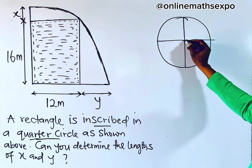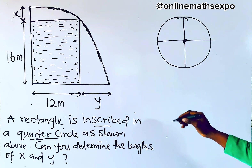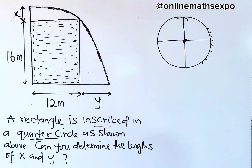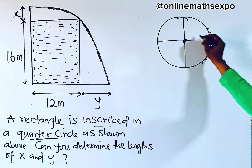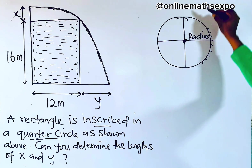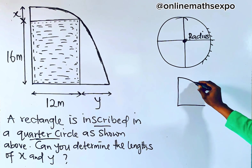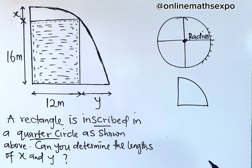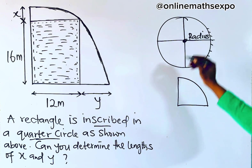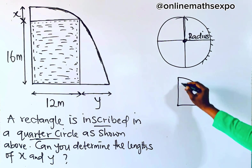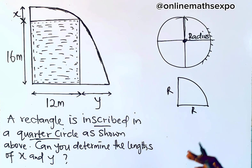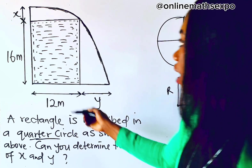Remember, when you have a circle, this is the center, and the line from the center touching the circumference is what we call the radius. So when you have a quarter circle, this line is the radius. Radii are the same length, so from here to here gives you the radius and from here to here also gives you the radius — they are equal.